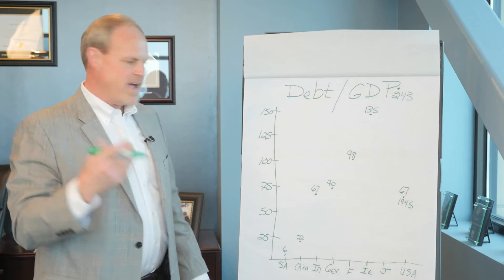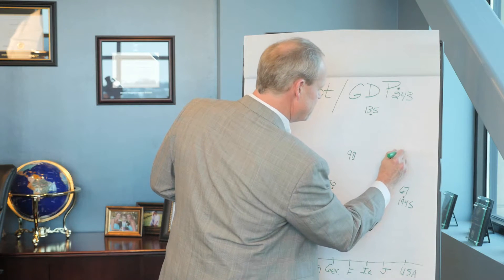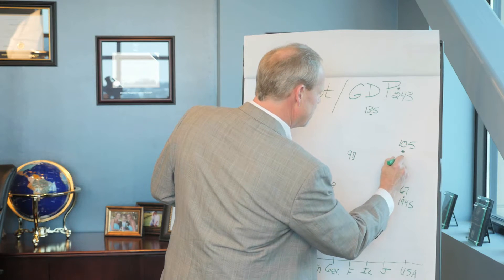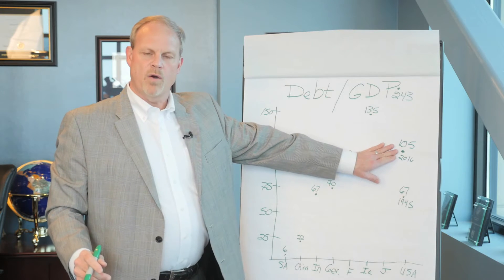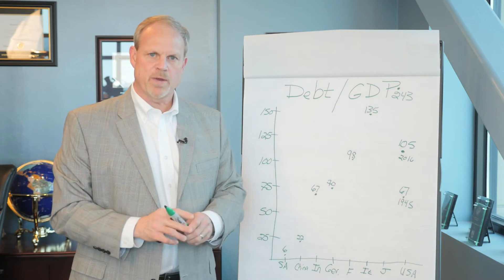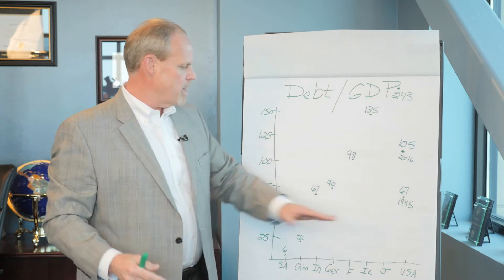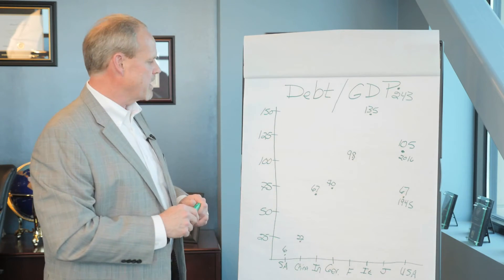However, fast forward to 2016, the United States is now 105% of our debt to GDP ratio. What that tells us is that our overall debt is growing at a much faster rate than our overall growth of the economy.